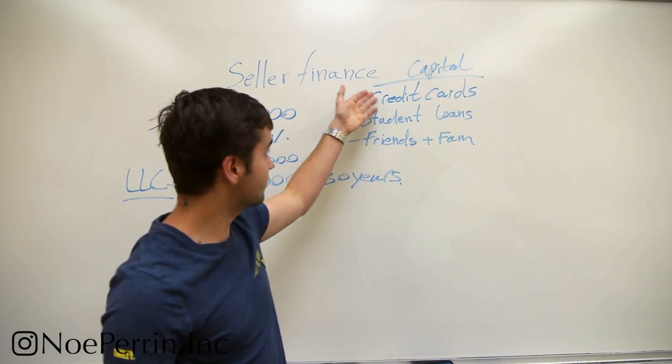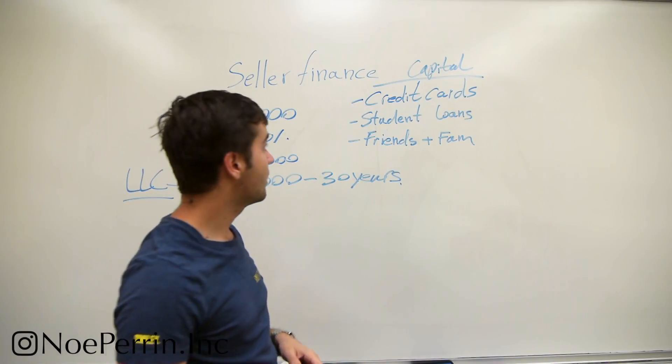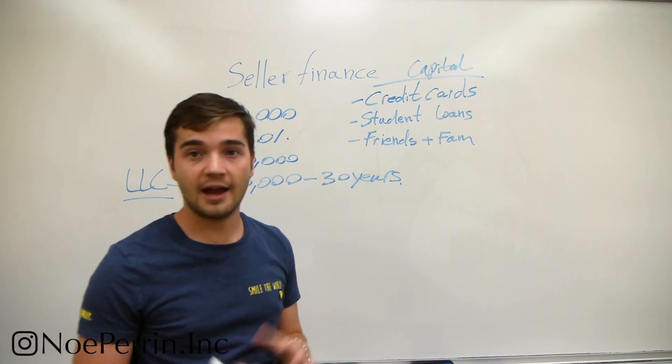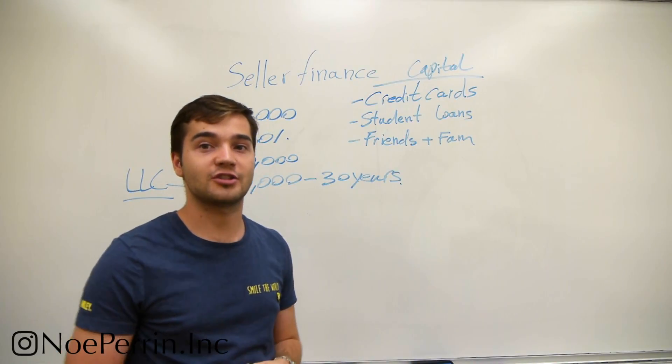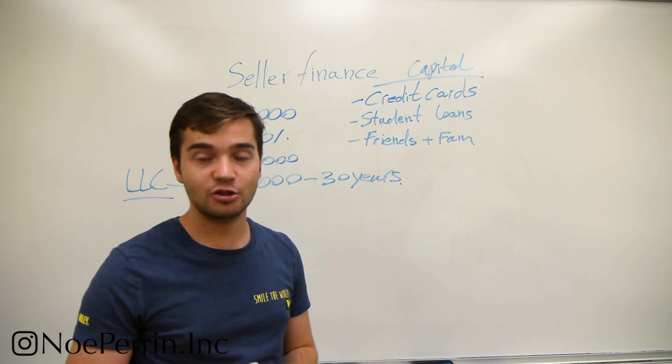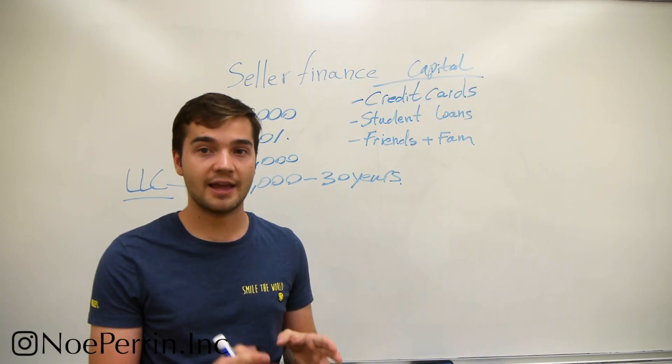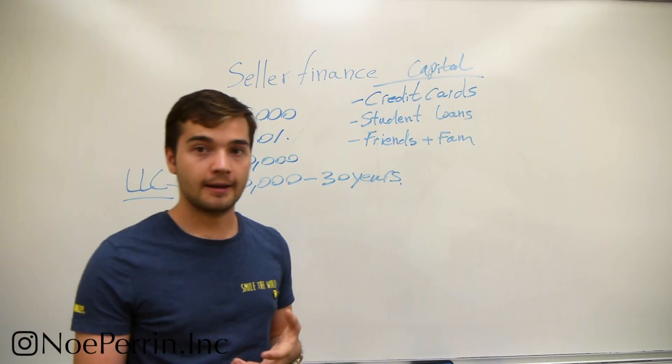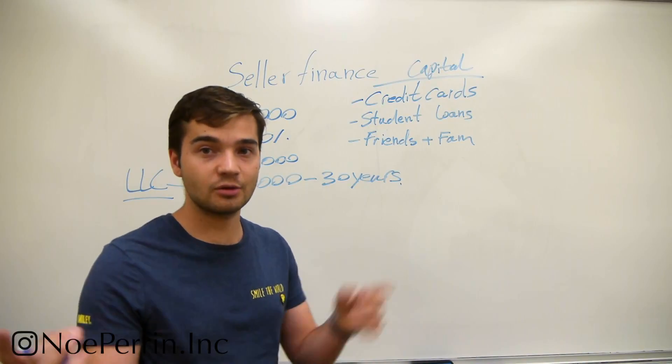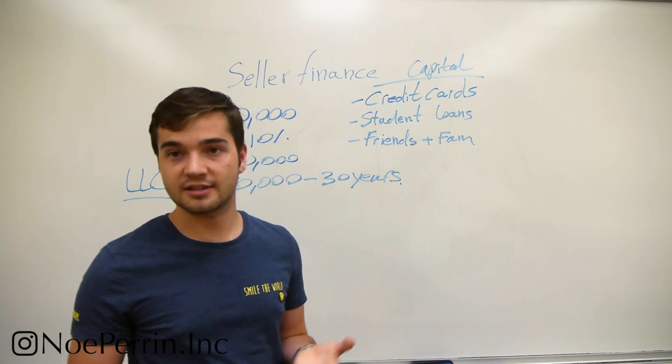Okay, so I've listed some capital sources here. We have credit cards. I have a personal friend of mine who has over $80,000 in credit card debt, and he used it to actually buy a house. And it's extremely high interest debt, but his property is also a very good deal, and so it pays for itself basically.